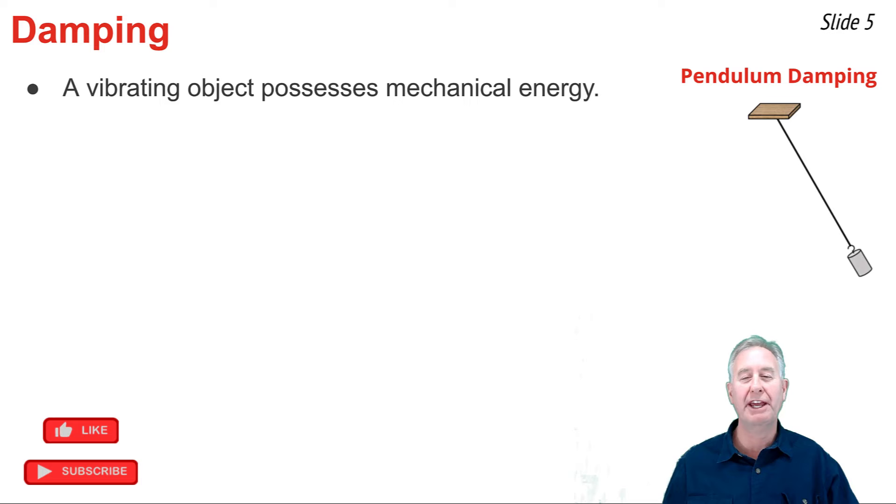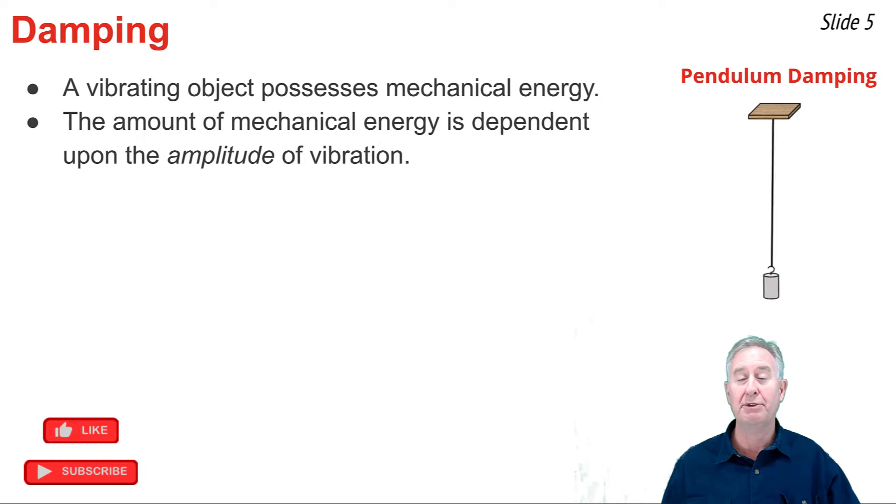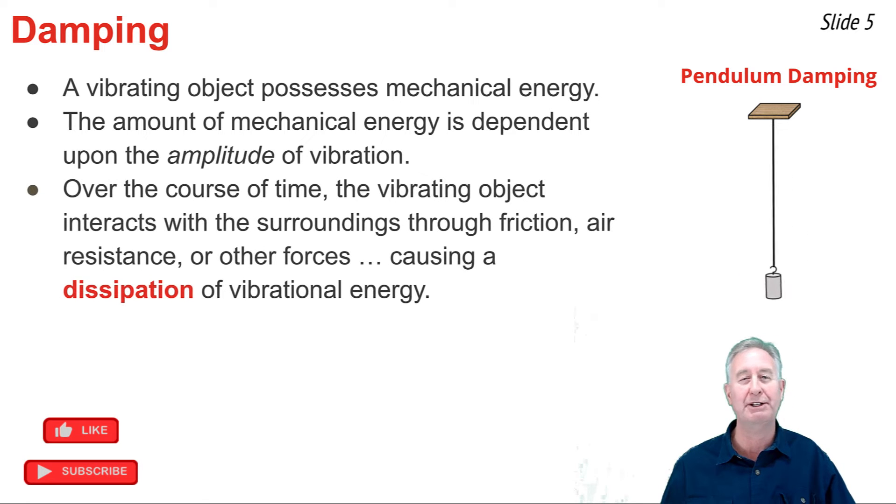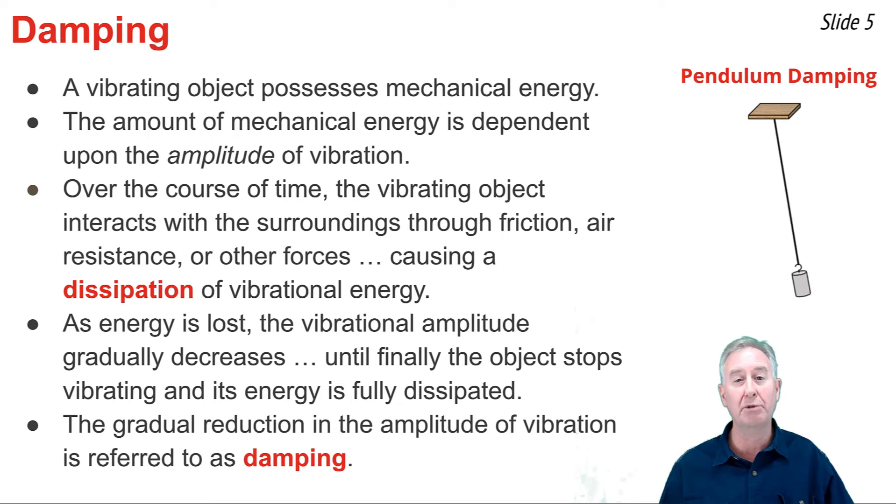A vibrating object possesses mechanical energy. The amount of mechanical energy it possesses depends upon the amplitude of its vibrations. An object that's vibrating back and forth with a large amplitude of vibration has a large amount of mechanical energy, and an object that vibrates back and forth with a small amplitude of vibration has a small amount of mechanical energy. Over the course of time, the vibrating object interacts with its surroundings through friction, air resistance, and other forces. This interaction results in the dissipation of energy to the surroundings. As energy is gradually lost to the surroundings, the amplitude of the vibration of the object gradually decreases, until finally it eventually stops vibrating altogether, a sign that the mechanical energy has been fully dissipated. This gradual lessening of the amplitude of vibration of an object is what is referred to as damping.